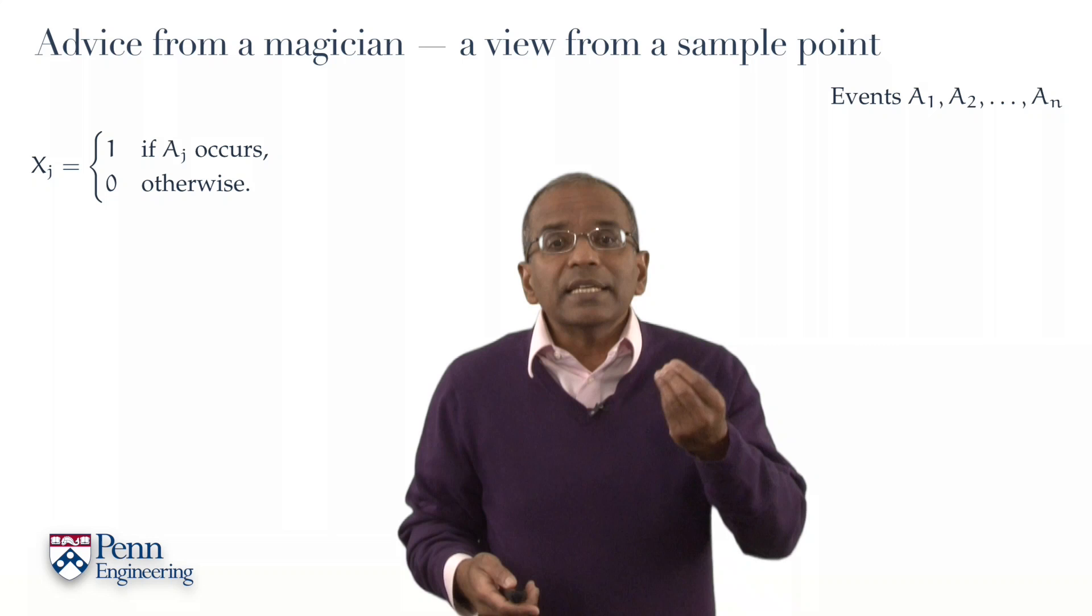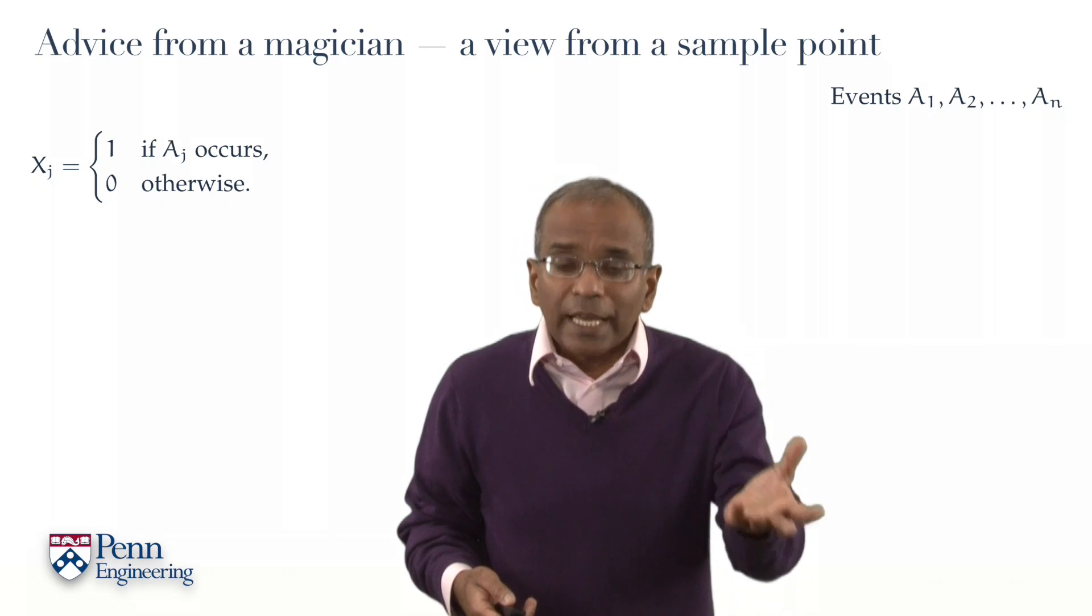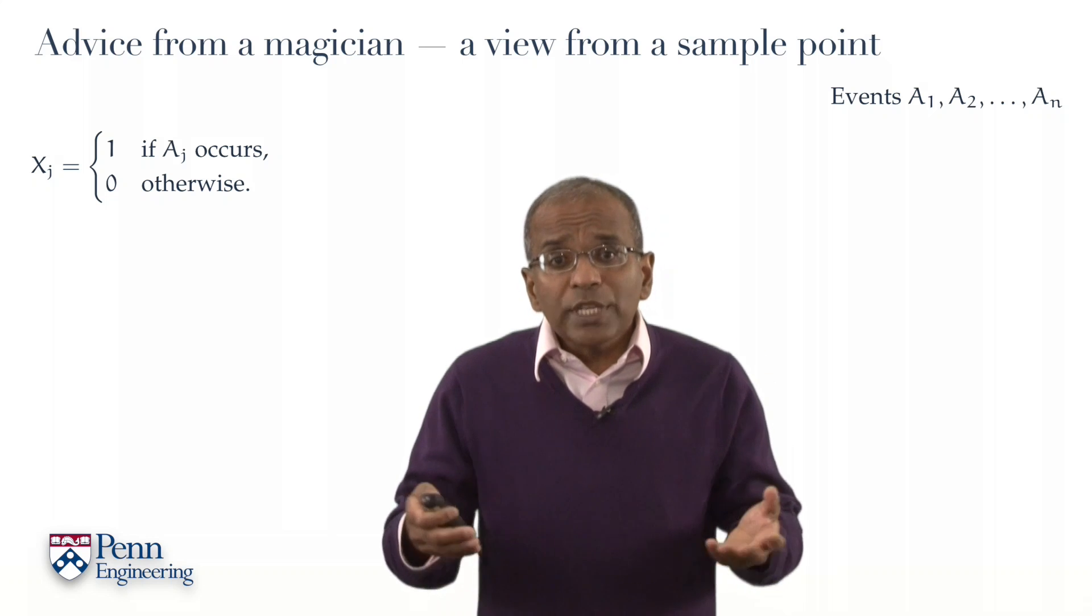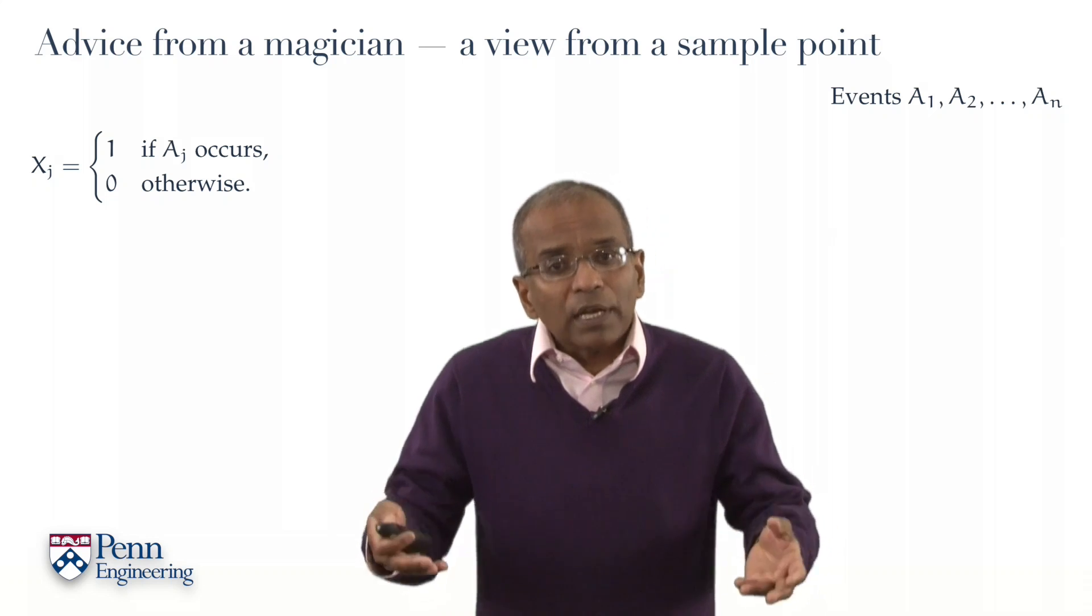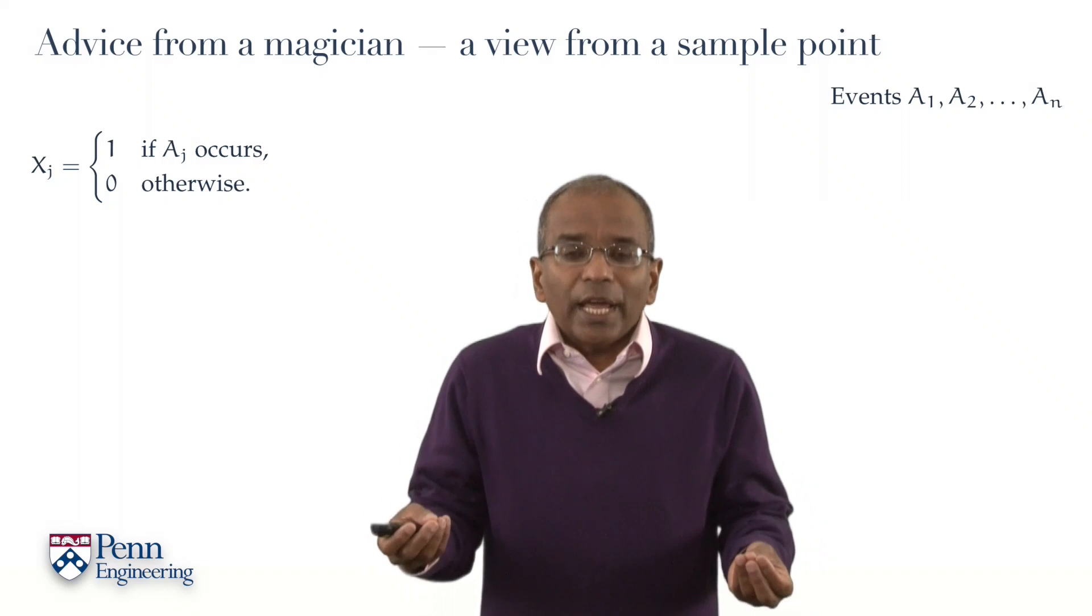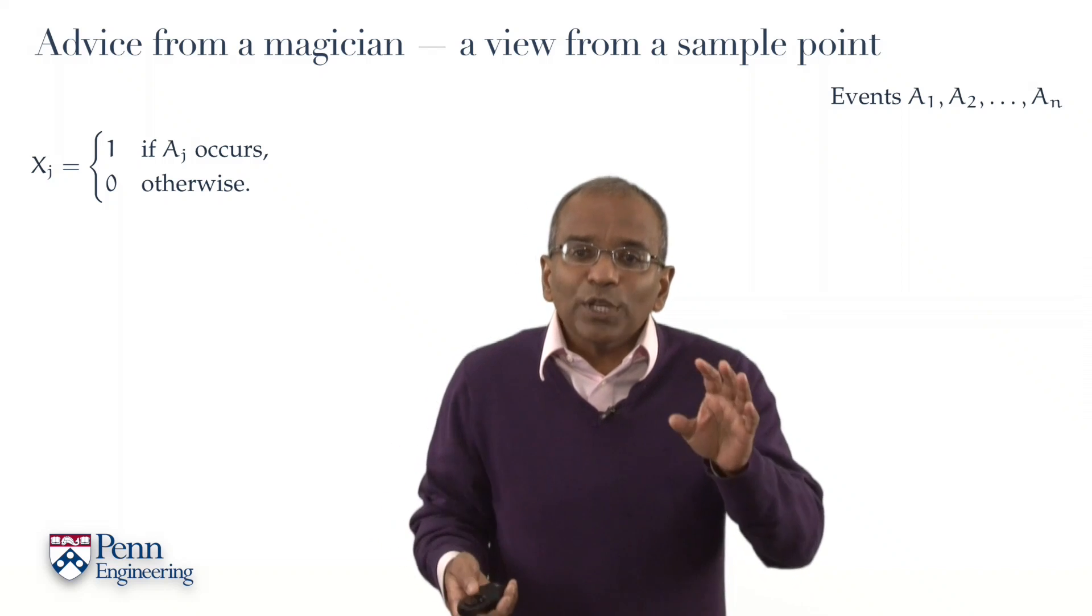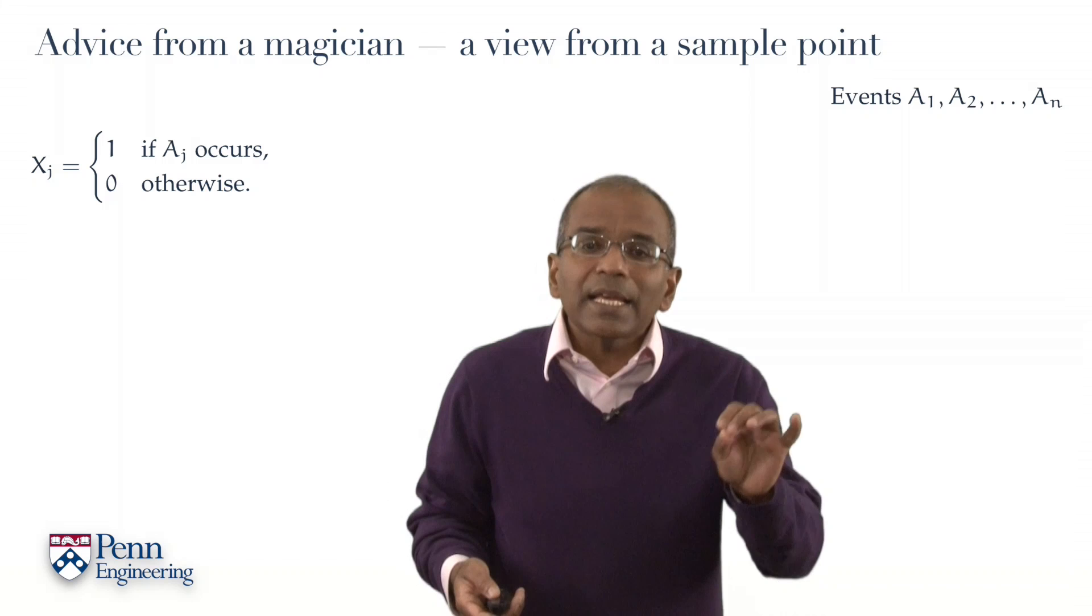X2 likewise is the indicator for the occurrence of the event A2. And proceeding along these lines, generically, let's write Xj for the indicator for the occurrence of the event Aj.